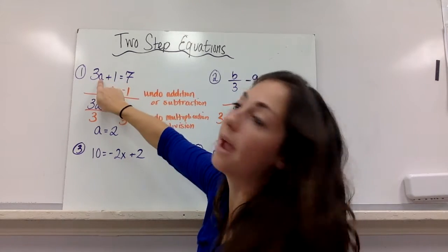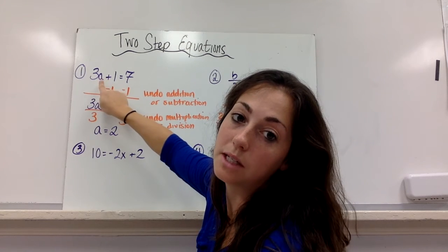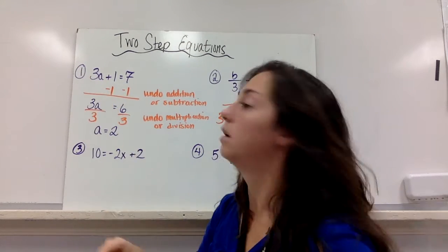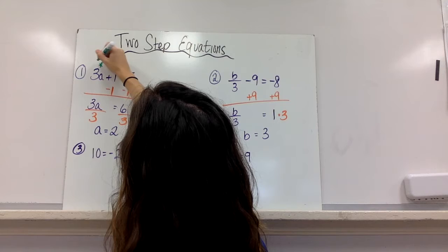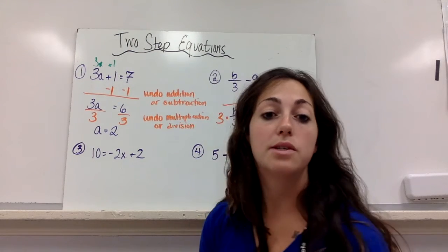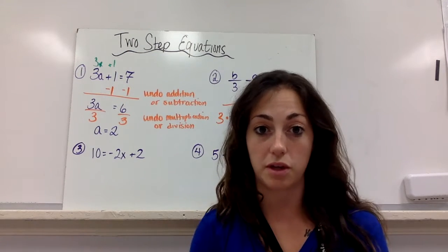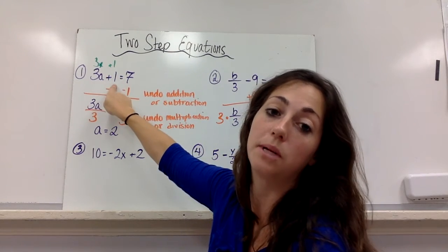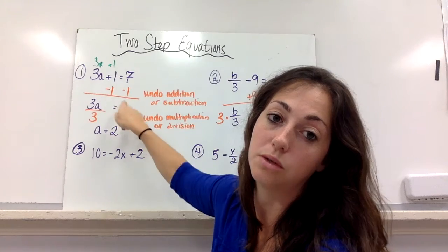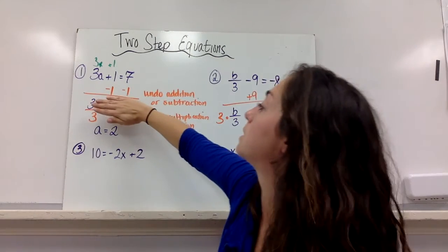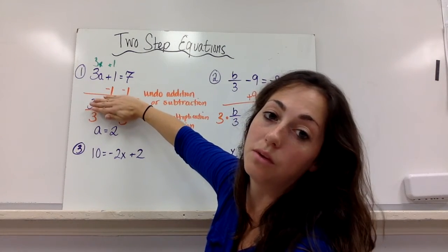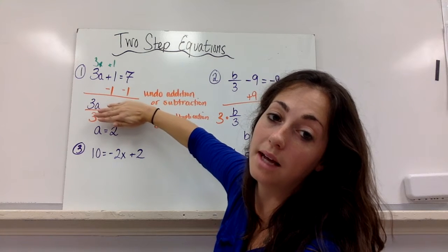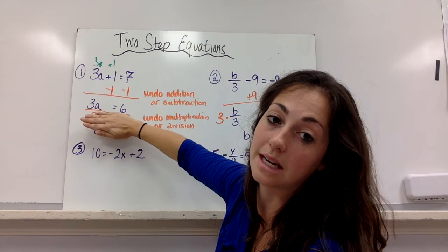So here's my a. What's happening to it? Well, it's being multiplied by 3 and added by 1. So I'm undoing the addition or subtraction. I'm being added by 1, so I have to undo the plus 1. The undo of that is to subtract 1 from both sides. Then I'm left with 3a, and 7 minus 1 is 6.